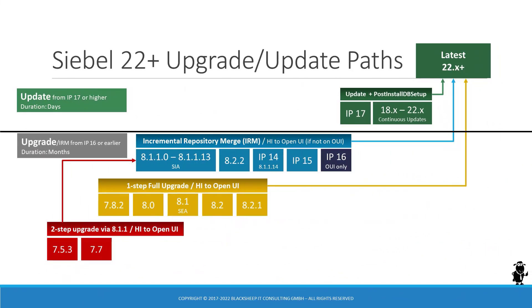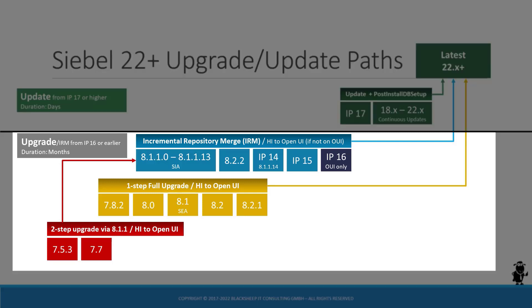Let's take a look at the path for an upgrade from a version prior to Innovation Pack 17 to the latest release. If your current Siebel CRM version is below IP 17, you have to conduct an upgrade project to get to Siebel 22.1 or higher. The duration of a Siebel CRM upgrade project is measured in person months, sometimes person years. The project complexity and duration are tightly coupled to the number of customizations applied over the years. In a nutshell, the more time and money was spent on customizing Siebel, the more time and money will have to be spent on the upgrade.